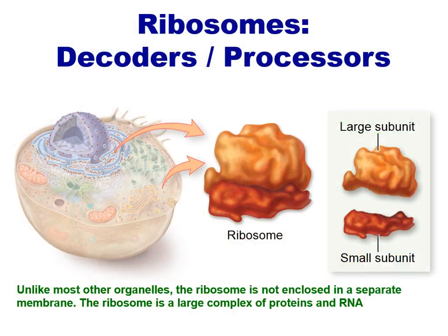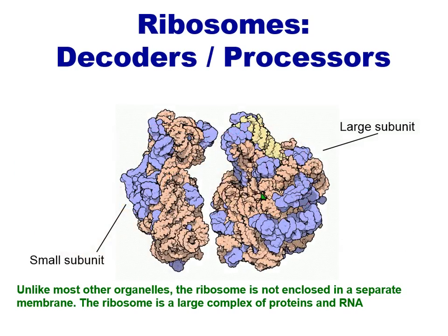This ribosome is a large collection of proteins and RNA, usually found in two subunits, with many different complex features and very important and varied function. You can appreciate the presence of many different proteins shown in a light blue color, and the RNA structural components shown in a taupe or tan color. Note, these components actually give the ribosome structure. Separate RNA molecules, known as messenger RNAs, actually contain the information that is decoded. Those messenger RNAs are not shown in these depictions.